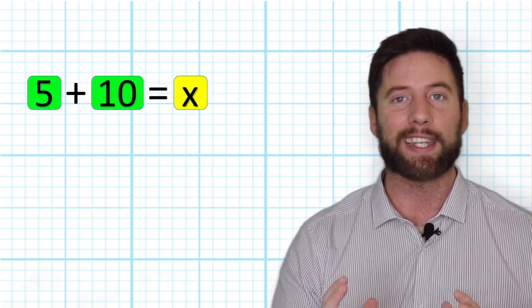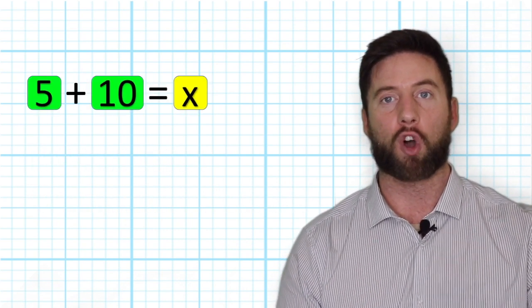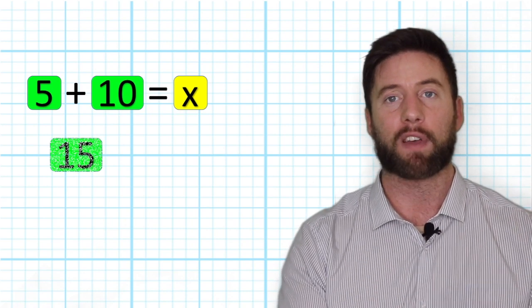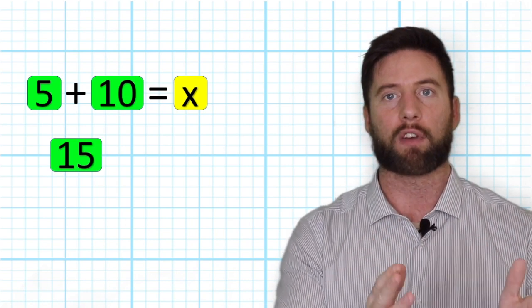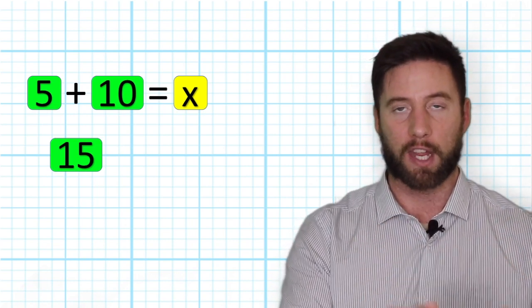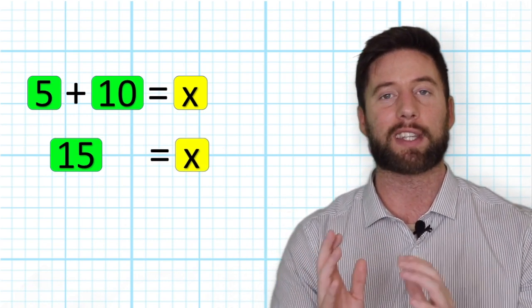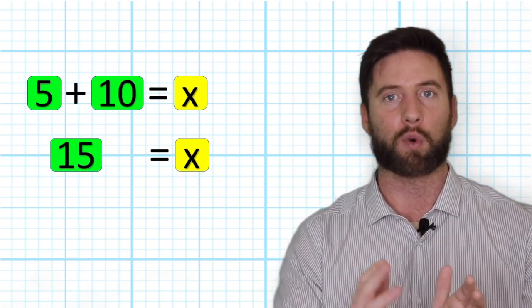In this example, it's pretty easy to see that we have 15. 5 + 10 is 15. And all we need to do is add 5 to 10, which gives us 15. Therefore, 15 = X, which is the same as X = 15.